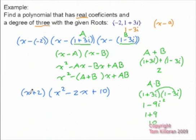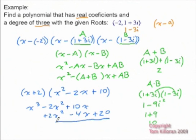And then we just have to multiply the rest of this out, so we're going to get x cubed minus 2x squared plus 10x plus 2x squared. Isn't that interesting? Minus 4x, and plus 20. So altogether, the possible polynomial that has these roots would be x cubed plus 6x plus 20.